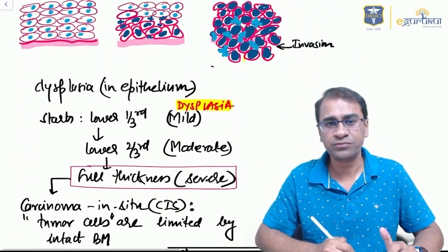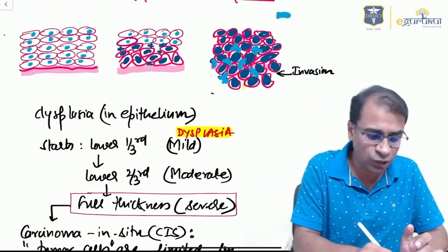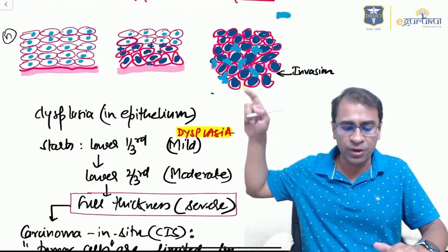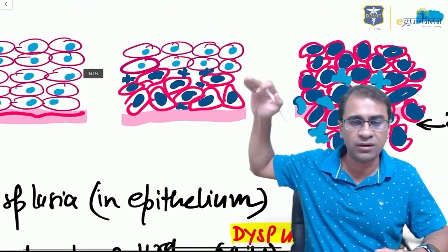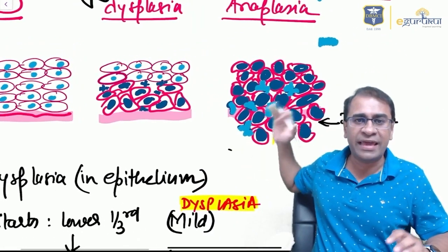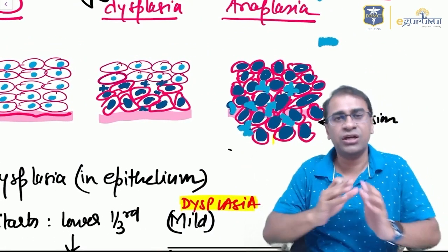Definition-wise, dysplasia is disordered growth, while anaplasia is loss of differentiation. This is a normal tissue. Look at the dysplastic tissue—they always start from the lower one-third. This is anaplastic tissue which also shows invasion into the tissues.